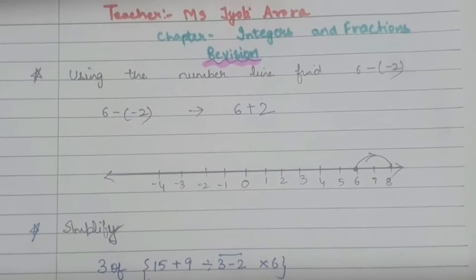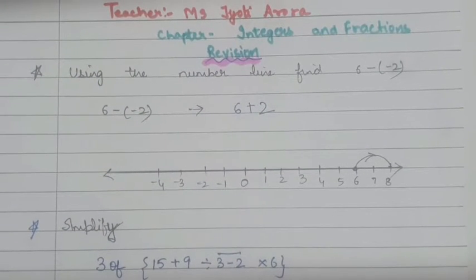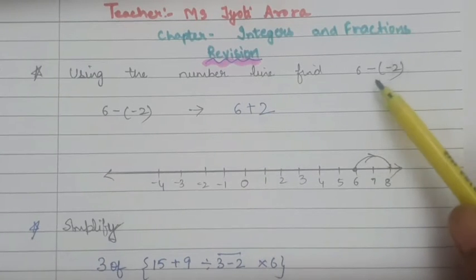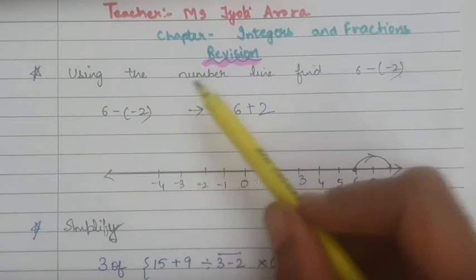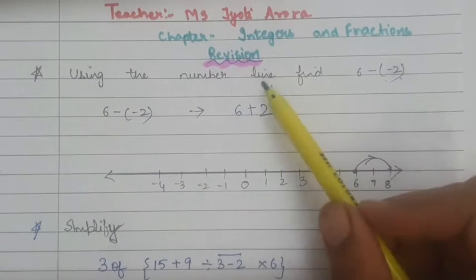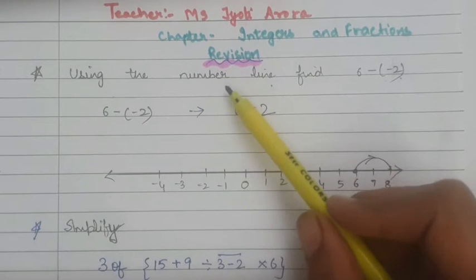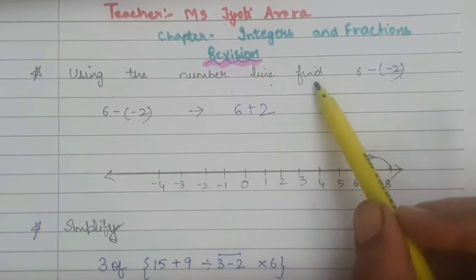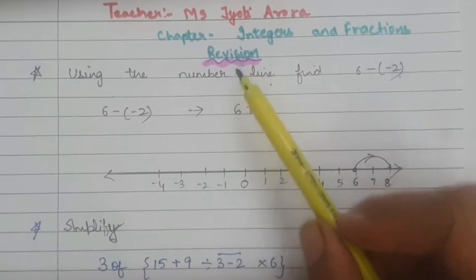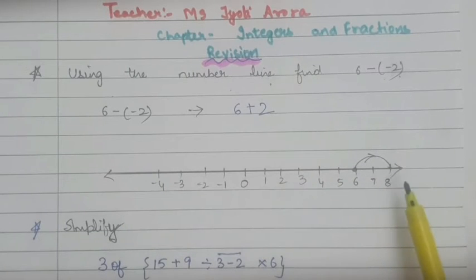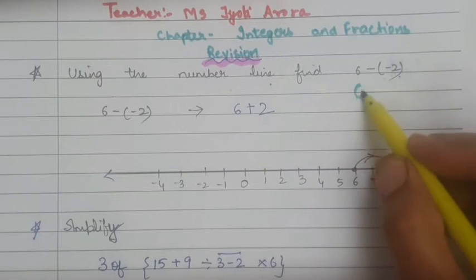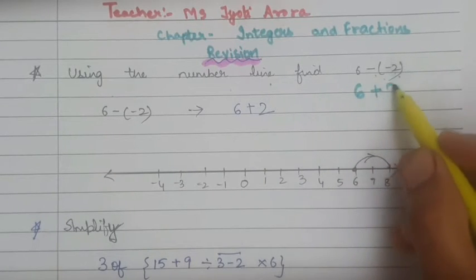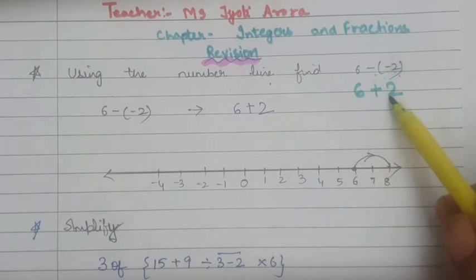The first question is: we have to find 6 minus minus 2 using the number line only. Whenever it is asked that you have to find using the number line only, then first of all, draw the number line. Now, 6 minus of minus 2 — minus minus is what? Plus. So, we get 6 plus 2.